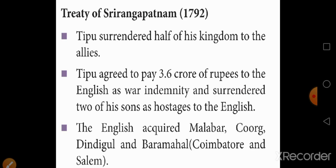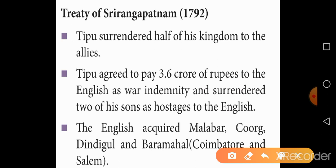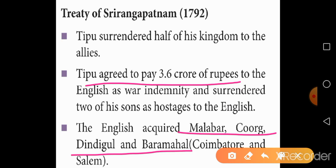The treaty resulted in the surrender of nearly half of Mysore's territory to the victorious allies. Tipu also had to pay a war reparation amount of over 3.6 crores. The British acquired the areas of Coorg, Malabar, Dindigul, and Baramahal. The Marathas gained a few places on the Tungabhadra river side, and the Nizam acquired some territories from the river Krishna to beyond the river Pennar.